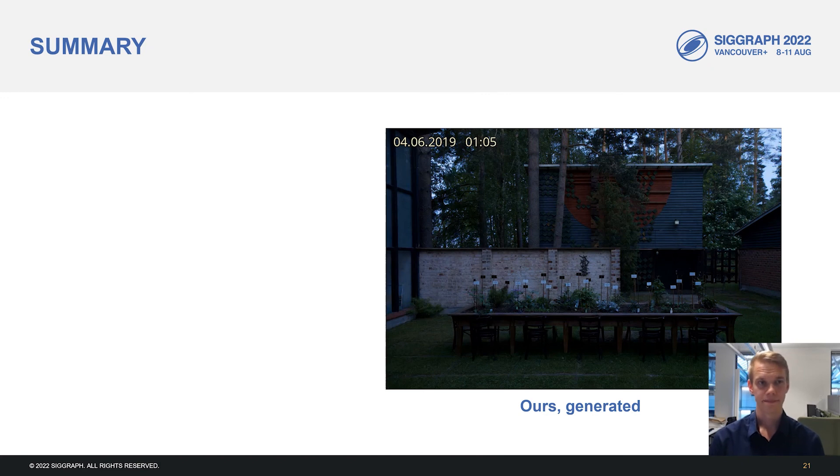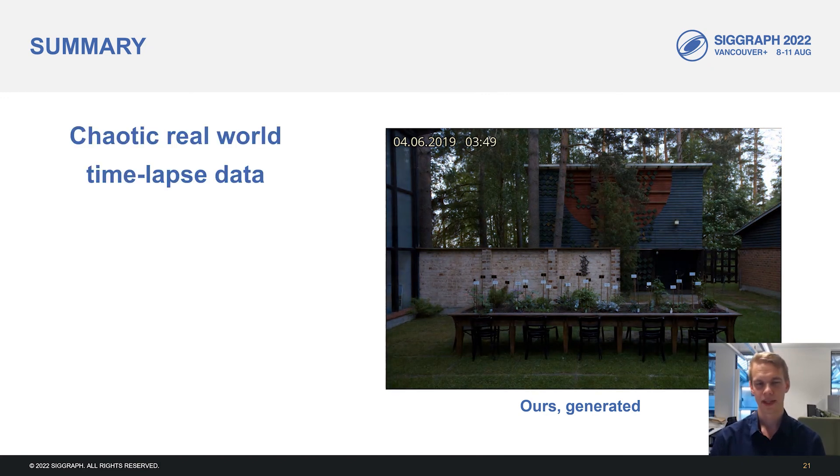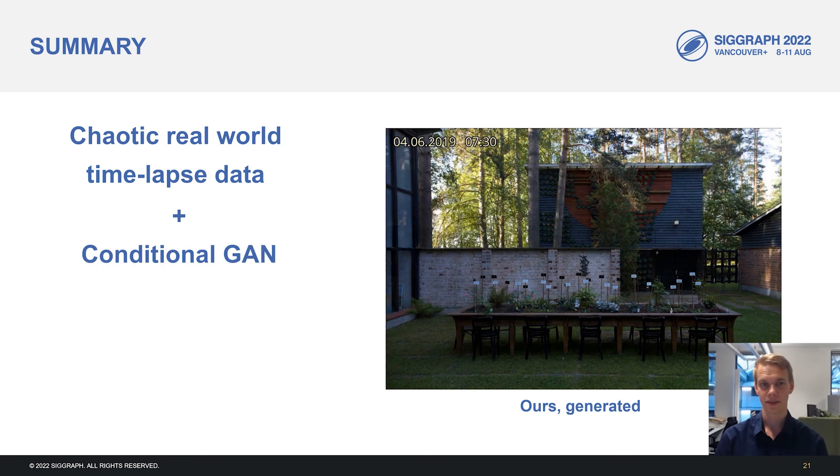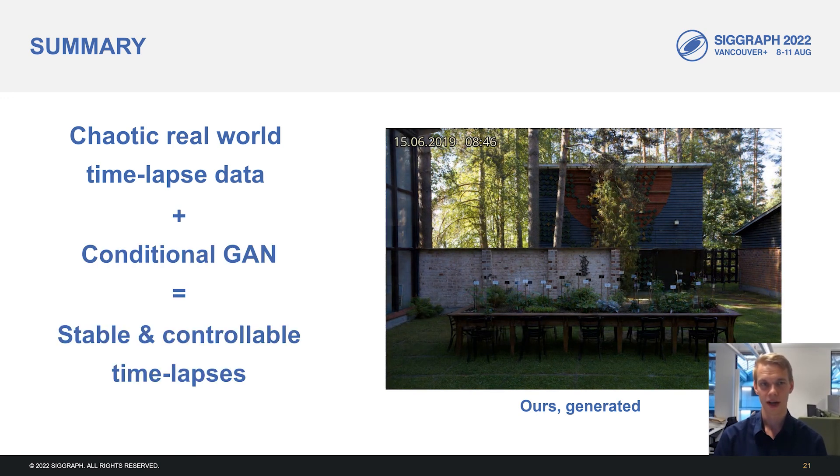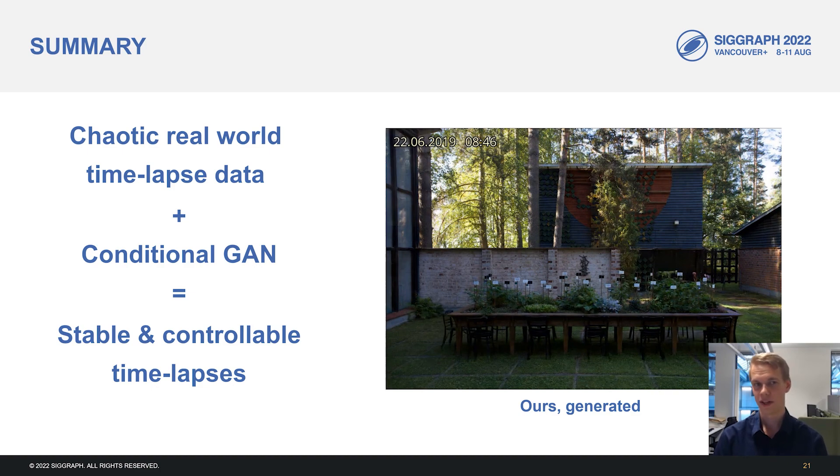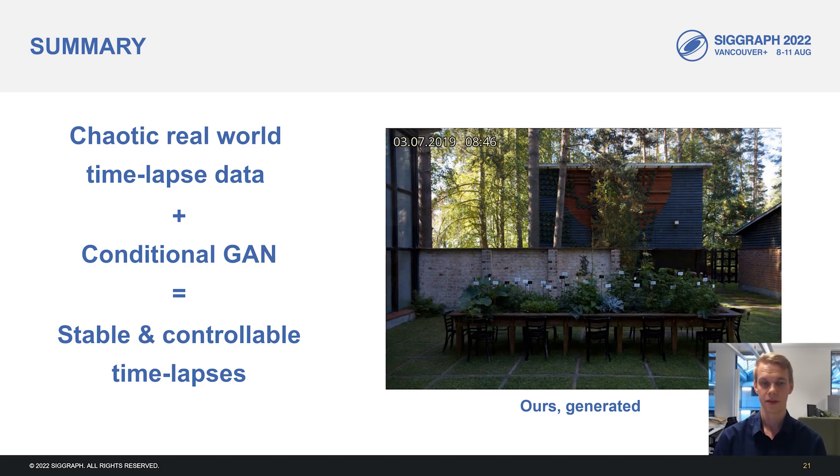Let's recap. By taking chaotic real-world timelapse data and using it to train a conditional GAN with a custom conditioning mechanism, we can produce stable and controllable output timelapses and visualize the data in ways that would not be possible with the input images alone.